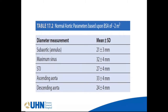The normal parameters of the aorta: annulus 22 to 24 mm, maximum sinus 32 ± 4 mm, STJ 27 ± 4 mm, ascending aorta 33 ± 4 mm, and descending aorta 24 ± 4 mm. These are the normal aortic parameters based on a body surface area of 2 meters squared.